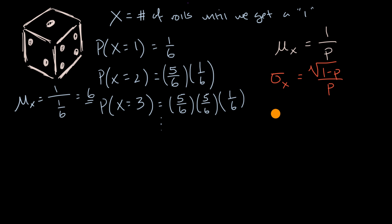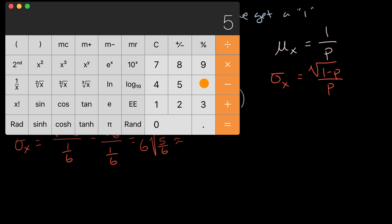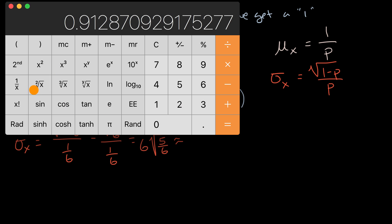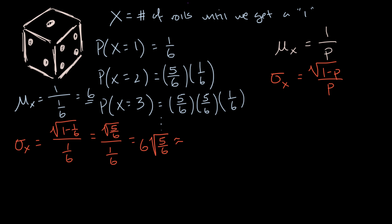In this situation, the standard deviation is the square root of (one minus one-sixth) all over one-sixth. That equals the square root of (five-sixths over one-sixth), which equals six times the square root of five-sixths. Five divided by six, take the square root, then multiply by six, gives us approximately 5.5.